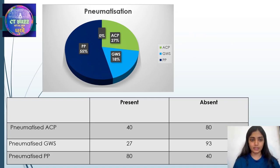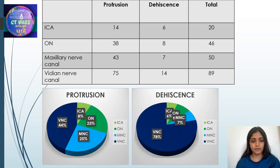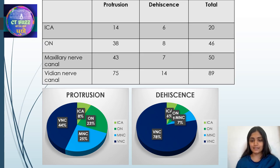Pneumatization of the pterygoid process was seen in 55% of patients. Pneumatization of the anterior clinoid process was seen in 27%, and pneumatization of the greater wing of sphenoid in 18%. Protrusion of the vidian nerve canal is seen in the maximum number of patients at 44%, followed by maxillary nerve canal protrusions at 25%, optic nerve protrusion in 23%, and internal carotid artery protrusion in 8%. Dehiscence of the vidian nerve canal was seen in 78%, followed by optic nerve dehiscence in 9%, maxillary nerve canal dehiscence in 7%, and internal carotid artery dehiscence in 6%.